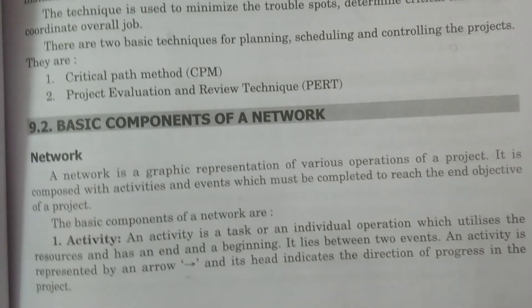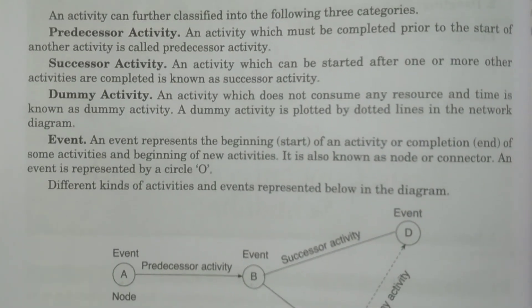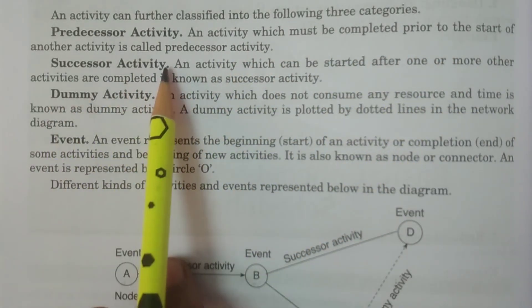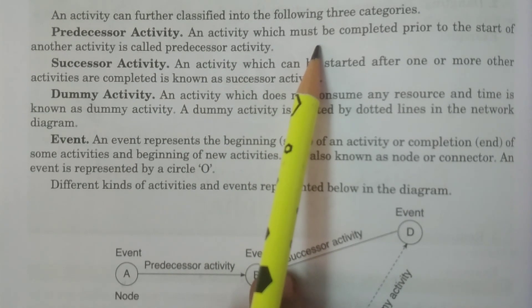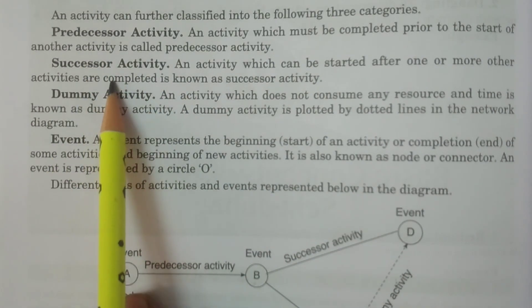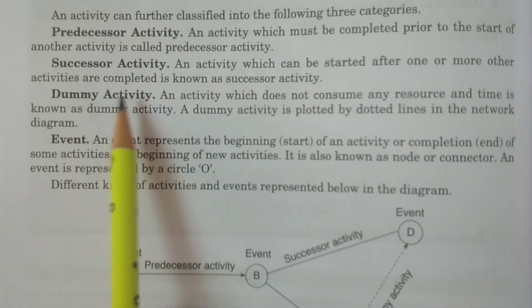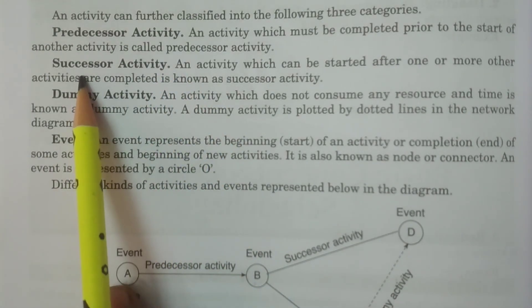The arrow indicates direction and progress — work is in progress. There are three types of activities. One is the predecessor activity: an activity that must be completed prior to the start of another activity. The successor activity is the opposite — an activity which can be started only after one or more preceding activities are completed.